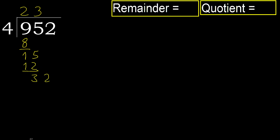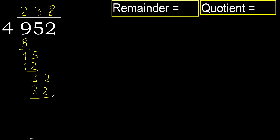Next: 32. 4 multiplied by 8 is 32, which is not greater. Subtract.